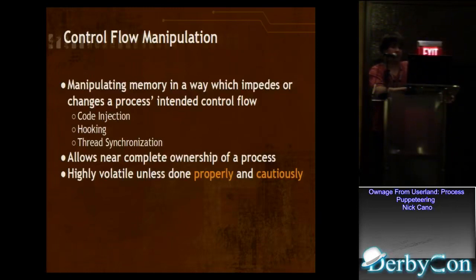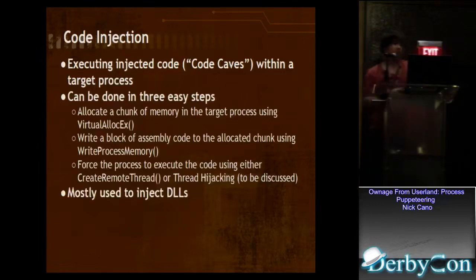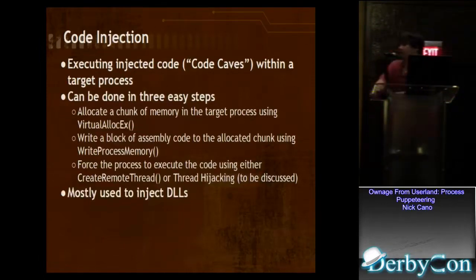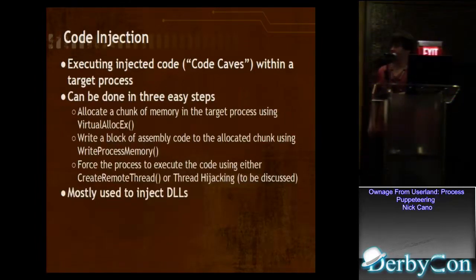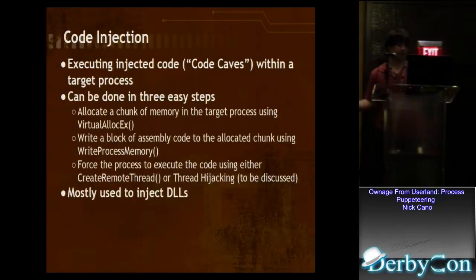This is more of a targeted attack. It can be used in game hacking or if you're trying to exploit a system and a certain program might be running that you're trying to get information from. So the first step would be code injection — executing injected code, which we call code caves, within a target process. We can do it in three easy steps: allocate the chunk of memory where we're going to put our code, write a block of assembly code to the allocated chunk with WriteProcessMemory, and force the remote process to execute that code using CreateRemoteThread or thread hijacking. Usually you're just going to inject a DLL and then do everything from inside there.